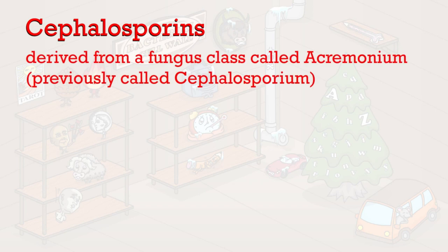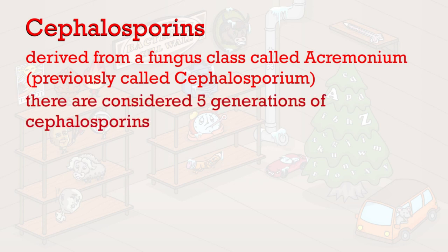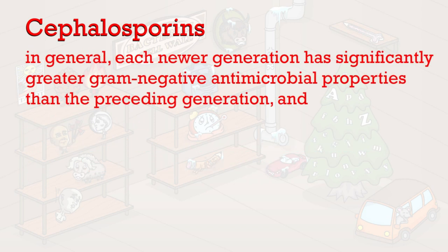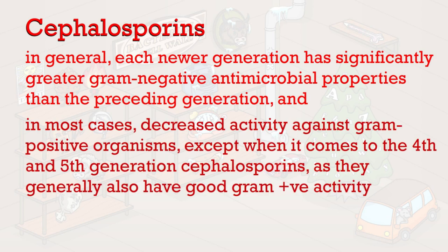Let's move on to the cephalosporins. Cephalosporins are derived from a fungus called acremonium, previously called cephalosporium. There are considered five generations of cephalosporins, each with different clinical efficacy against specific types of bacteria. Each newer generation has significantly greater gram-negative antimicrobial properties than the preceding generation, and in most cases decreased activity against gram-positive organisms, except for the fourth and fifth generations, which generally also have good gram-positive activity.